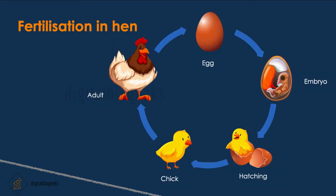In a hen, the fertilization is internal. Soon after fertilization, the zygote travels down the oviduct and many protective layers form around it — you are familiar with the hard covering of an egg. When this protective cover is formed, the hen lays the egg. Then the hen sits on top of the egg to give it warmth. At this stage, the development of the embryo takes place. It takes 3 weeks for the embryo to develop into a chick, and then it bursts open the egg shell.